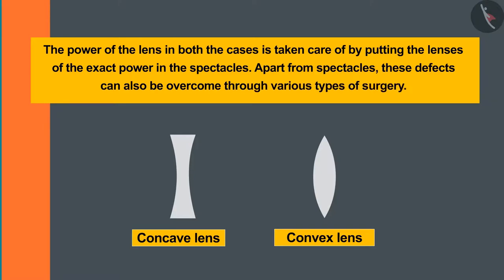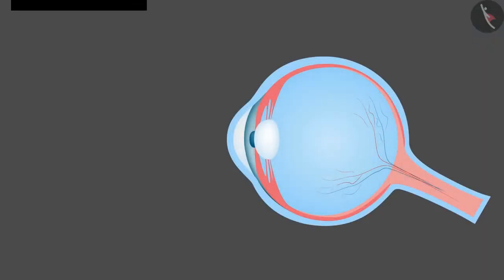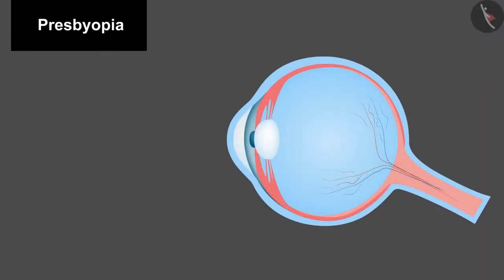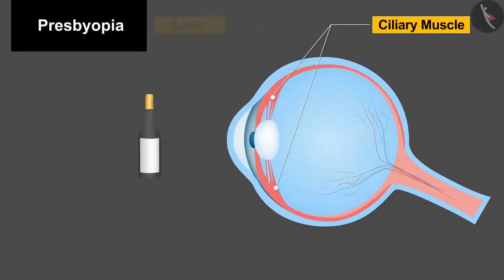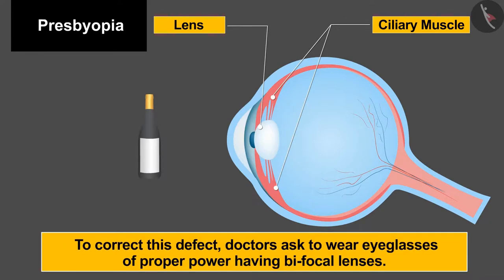The third defect is known as presbyopia. In this defect, it is difficult for a person to see both far and near. Aging is the reason behind this defect for most people, where both the muscles and the lens get weakened. To correct this defect, doctors ask to wear eyeglasses of proper power having bifocal lenses.